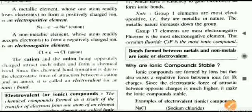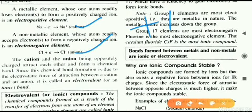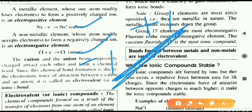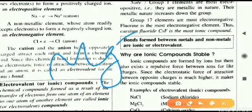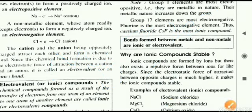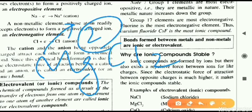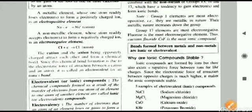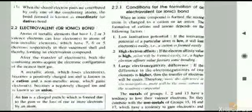Electrovalency is defined as the number of electrons lost or gained in the process of bonding. In the case of sodium chloride, one electron is involved, so the electrovalency is one. In the case of magnesium forming MgCl₂, magnesium loses two electrons — these are gained by two chlorine atoms, one each — so the electrovalency of magnesium is two.